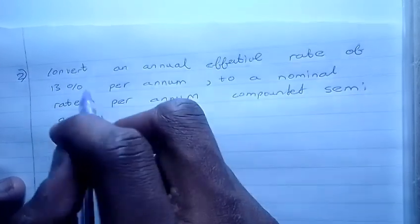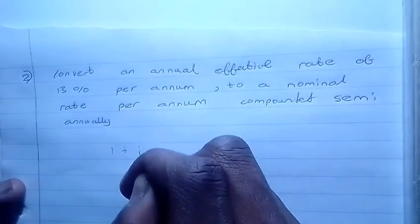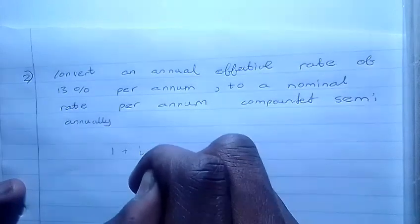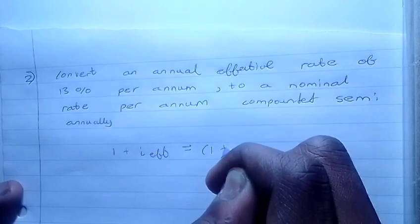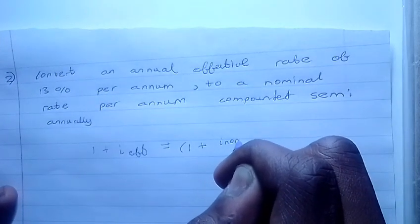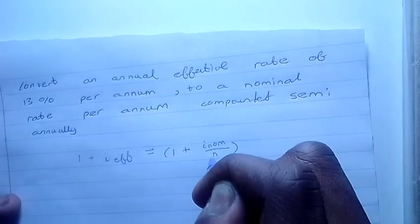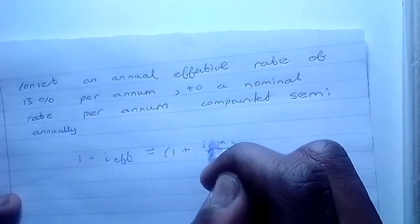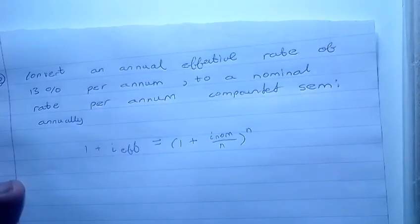So first we're gonna put down the equation which is 1 plus i for interest effective and then put down the equation 1 plus interest for nominal rate over n which is the compounding period.